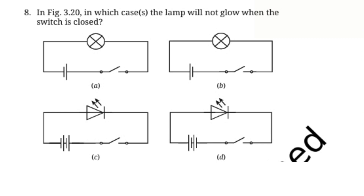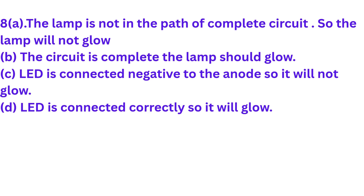Question number eight: In figure 3.20, in which case will the lamp not glow when the switch is closed? Option A: The lamp is not in the path of a complete circuit, so the lamp will not glow. Option B: The circuit is complete, so the lamp should glow. Option C: The LED is connected negative to the anode, so it will not glow. Option D: The LED is connected correctly, so it will glow.